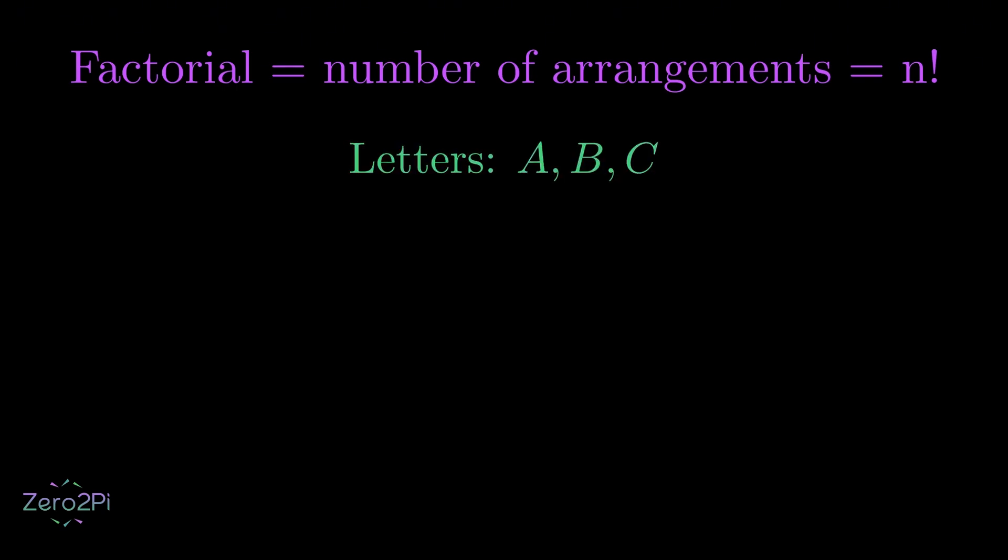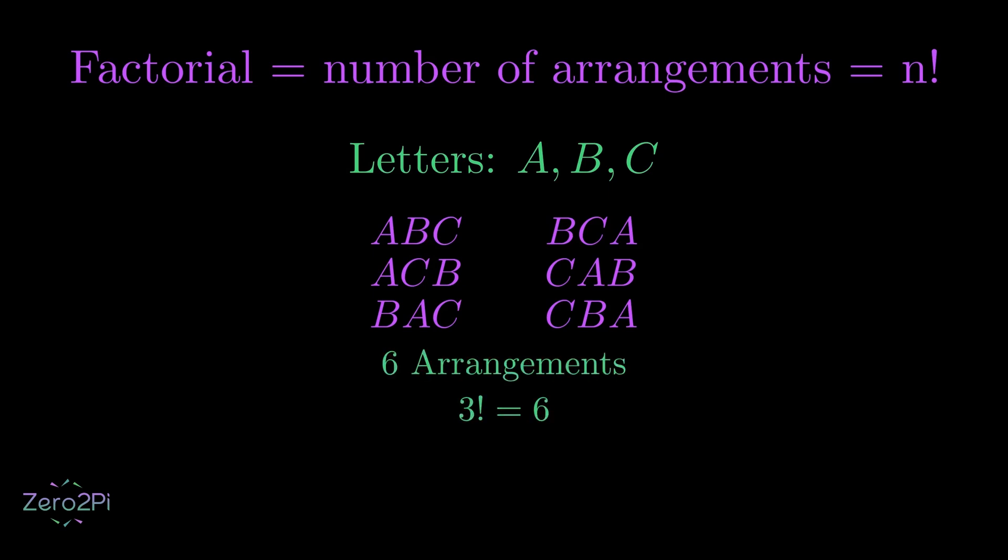First, we'll take three letters A, B and C. How many ways can we arrange them on a shelf? There you go. We have a total of six arrangements. So, by the definition of a factorial, we can say the factorial of 3 is equal to 6.